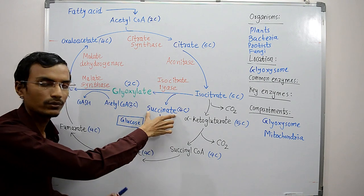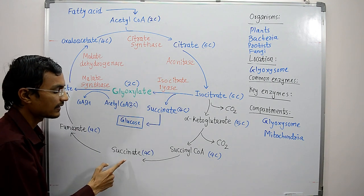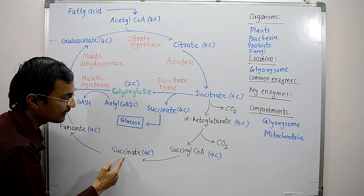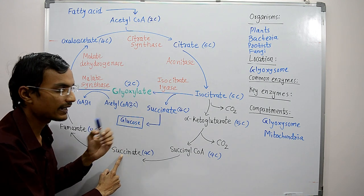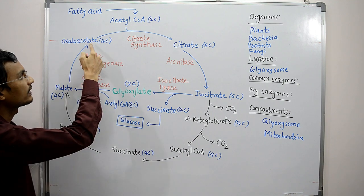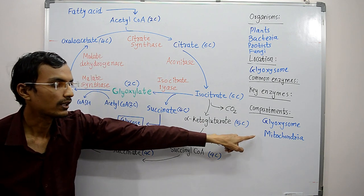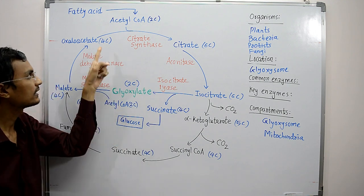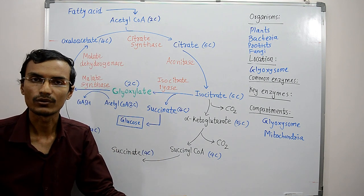The succinate produced inside the glyoxysome is transported to the mitochondrial matrix, where it enters the citric acid cycle. The two oxidative decarboxylation reactions in which carbon atoms are lost are bypassed. Succinate is converted to fumarate, then to malate, then to oxaloacetate. This oxaloacetate is transported to the cytoplasm, where it is converted to glucose by gluconeogenesis.